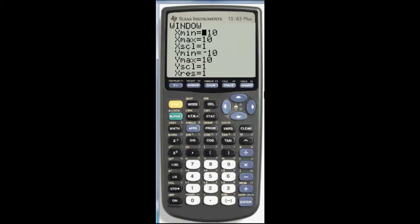Go to window. Let's change our x minimum to negative 1, and make sure you use the negative sign, not the minus. This one is for subtraction. This one down here is for negative. So, hit enter, and let's change our x max to 2.